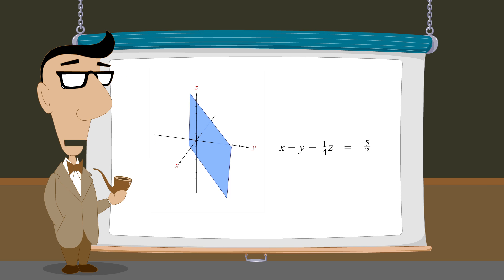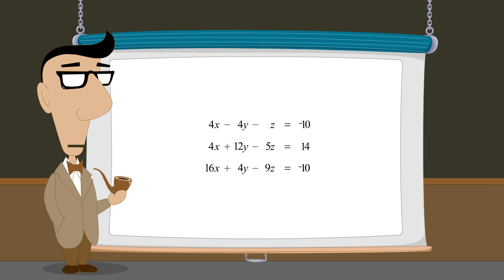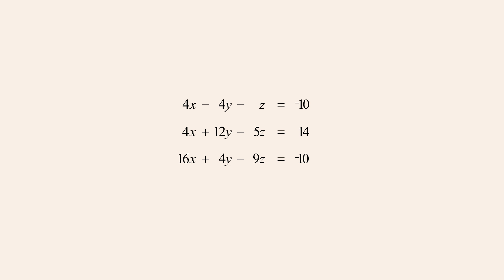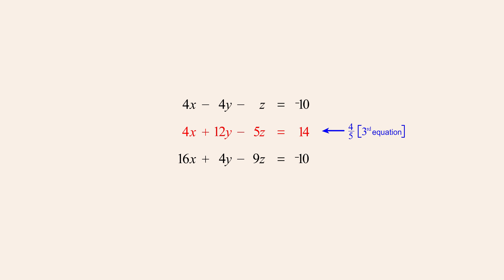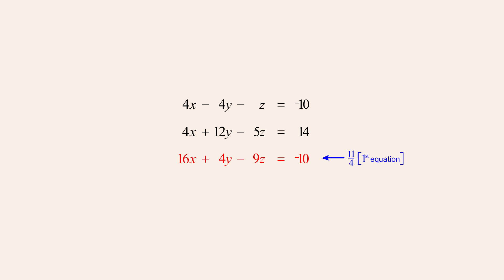Now let's see how Gauss-Jordan elimination simplifies a dependent system of three linear equations where each equation is a linear combination of the other two. In this example, no two equations are multiples of each other. However, although it is certainly not obvious by looking at the equations, each equation is actually a linear combination of the other two. The first equation is 4 elevenths times the third equation plus negative 5 elevenths times the second equation. The second equation is 4 fifths times the third equation plus negative 11 fifths times the first equation. And the third equation is 11 fourths times the first equation plus 5 fourths times the second equation. Therefore, all three equations are dependent.